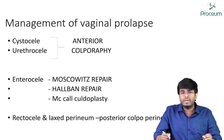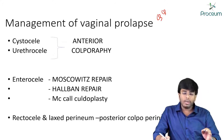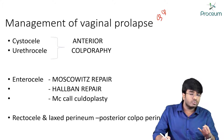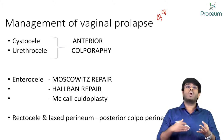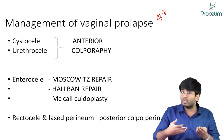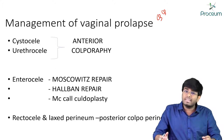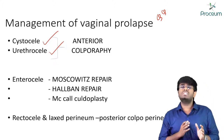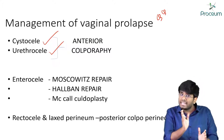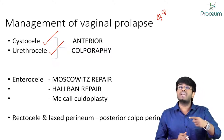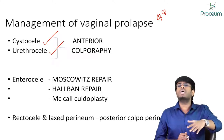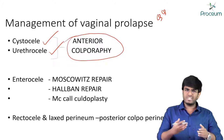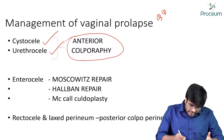Now for the management: we've already seen management of uterine prolapse in different conditions — nulliparous, multiparous, contraindications, congenital cases. Now for vaginal prolapse: whenever there is a cystocele, urethrocele, or their combination — cystourethrocele — the management is anterior colporrhaphy, because this involves the anterior vaginal wall.